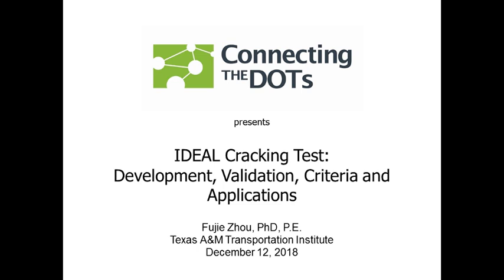Without further ado, let me give you a little background on Fuji. He's a research engineer at the Texas A&M Transportation Institute, where he's been involved with pavement research and lab testing for about 18 years. He is currently leading NCHRP Idea 195 to develop an ideal cracking test for asphalt mix design, quality control, and quality assurance. He's an active member of ASTM and the Association of Asphalt Paving Technologies, and has been winning industry research design awards consistently since about 2004.